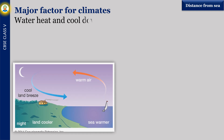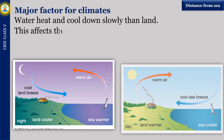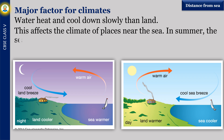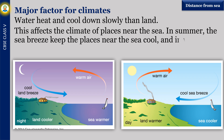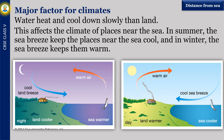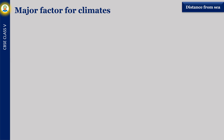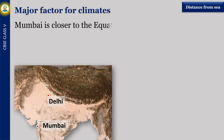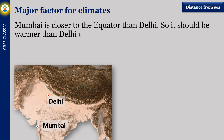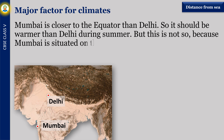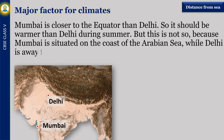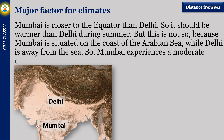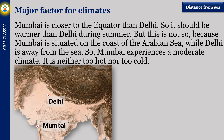Water heats and cools down more slowly than land. This affects the climate of places near the sea. In summer, the sea breeze keeps places near the sea cool, and in winter, the sea breeze keeps them warm. Mumbai is closer to the equator than Delhi, so it should be warmer than Delhi during summer. But this is not so, because Mumbai is situated on the coast of the Arabian Sea, while Delhi is away from the sea. So Mumbai experiences a moderate climate — it is neither too hot nor too cold.